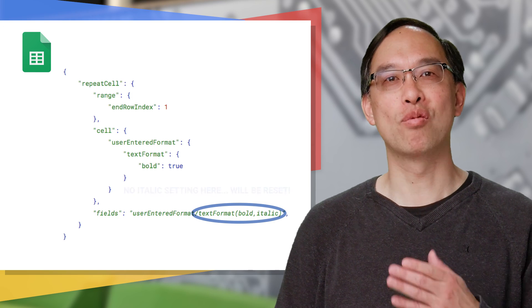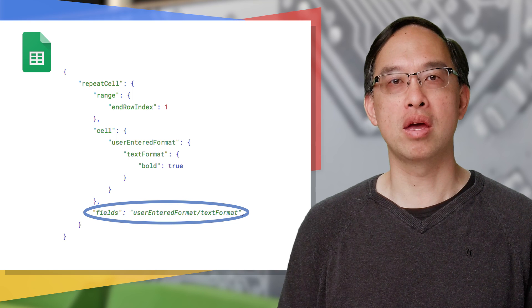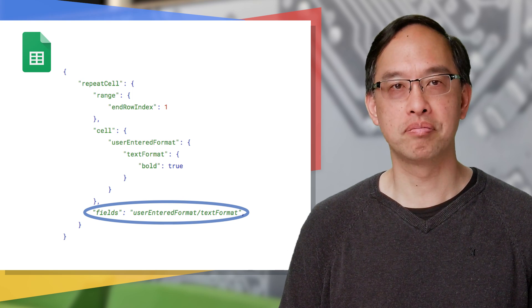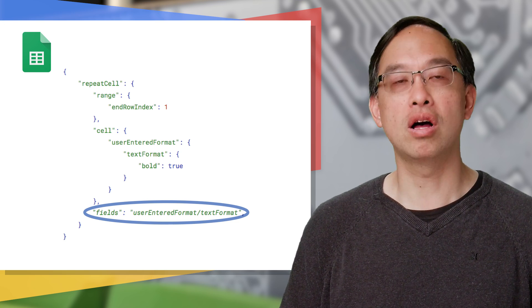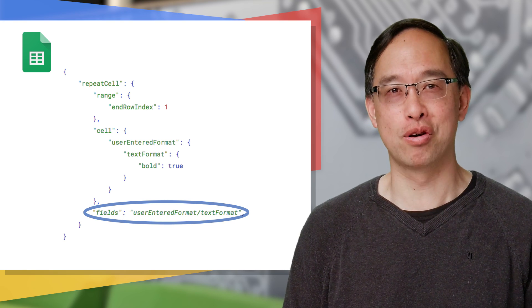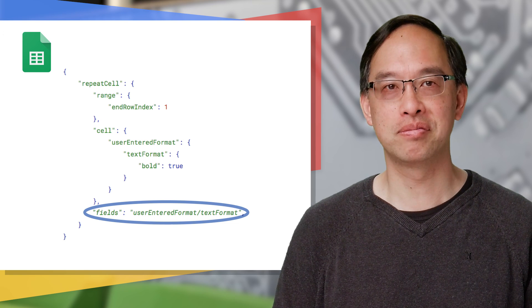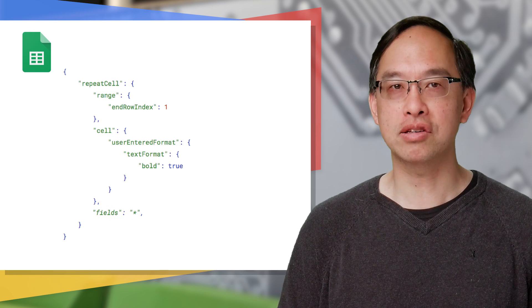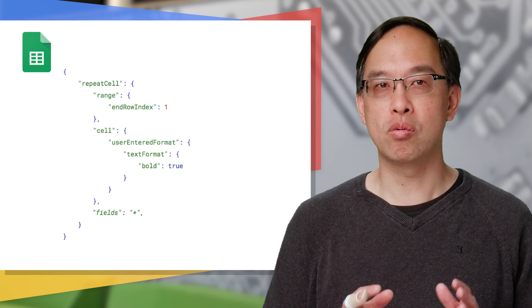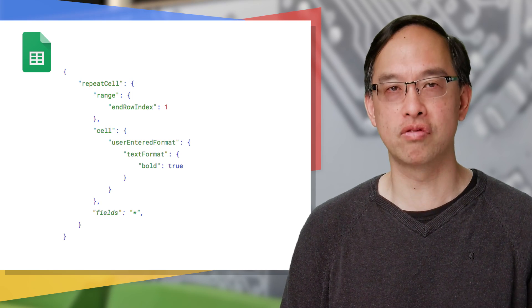Here's a more extreme example. Let's just remove the last part of that mask — now it's a superset making up all text format fields. Any field not in the request will be reset. In this case, while bold will still be set, all others will be reset — you can kiss italics goodbye again, and the same goes for strikethrough and underline. The original font family and size will come back too. If you want to specify all fields, you can use asterisk as a shorthand alternative to listing every single one, but be wary that if the API changes you could have inadvertent side effects, so minimize your use of the asterisk.